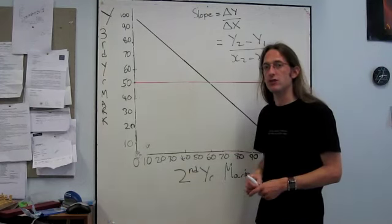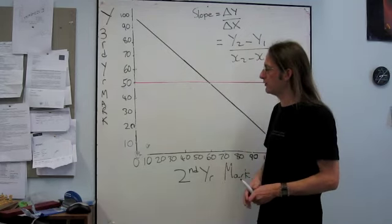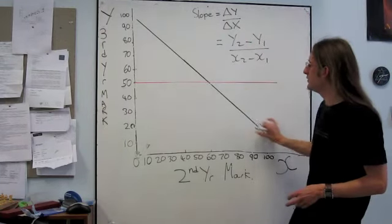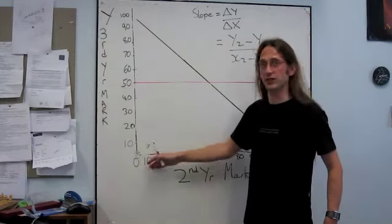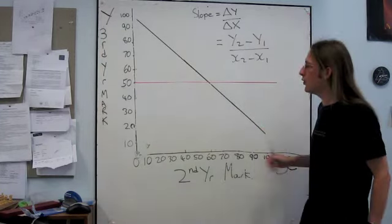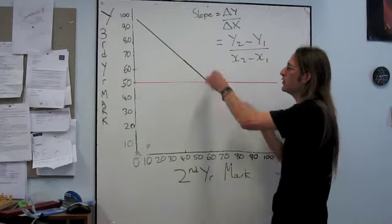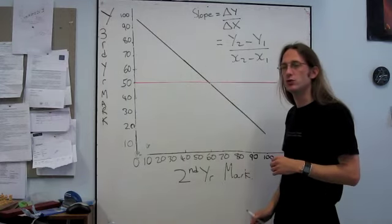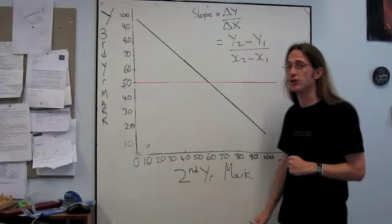But there are a couple of other situations which you might find yourself in where the functions look different to a positive one. You may have a situation where your function or your line descends, so as x increases, y decreases. Or you might find a situation in which the function is completely flat. But it doesn't matter in which direction or how these lines lie on your graph, you still use exactly the same equation to work out what the slope is.